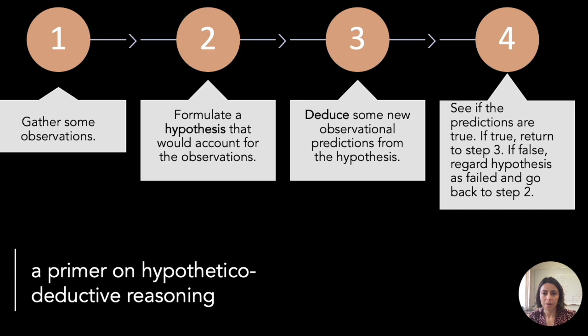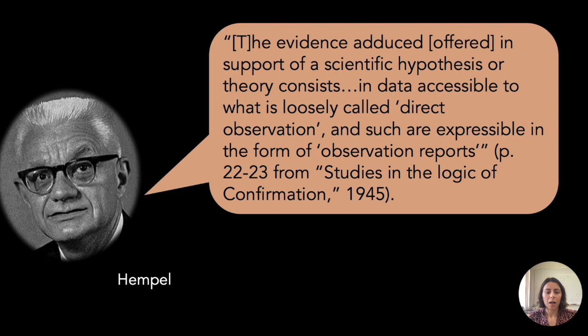The basic idea is a cyclical process: always gathering observations, formulating new hypotheses, deducing observational consequences, gathering more observations, and so on. The logical positivists really wanted to emphasize direct empirical access to the objects being studied. Carl Hempel writes in Studies in the Logic of Confirmation: 'The evidence offered in support of a scientific hypothesis consists in data accessible to what is loosely called direct observation, and such are expressible in the form of observation reports.'